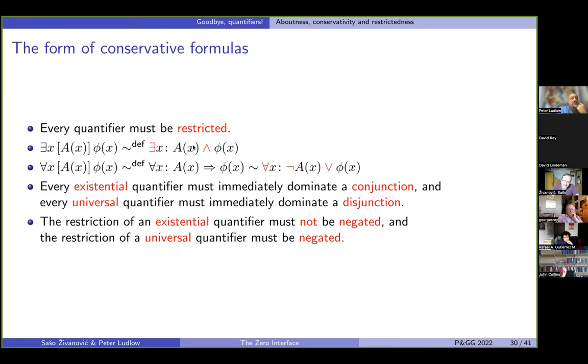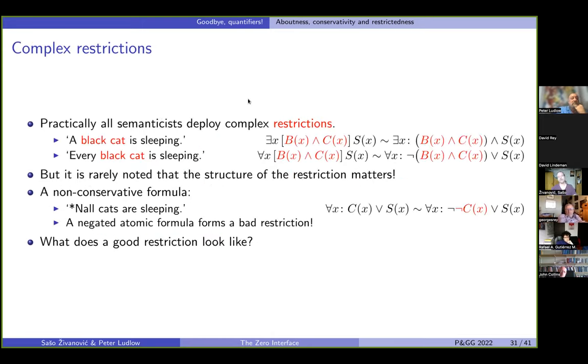But now this a here is an atomic formula. However, in practice, all semanticists use complex restrictions in the sense of black cat here. So there is an x that is both black and cat. Now, what is really noted here is that the structure of the restriction matters in the sense that not every formula, if you stick it into the restriction, is going to give you a conservative result. So, let us stick in not cx, as here, so not cat, into the template of the universal quantifier, restricted one. So, what we will get, because the double negation cancels, is every x is either a cat or sleeping, what we really get is the meaning of no cats are sleeping. So, we get a non-conservative meaning as we have seen earlier. So, this is not a good restriction. Not every restriction is good, but what does a good restriction look like is our question. And this is a question that Percival can help us answer.